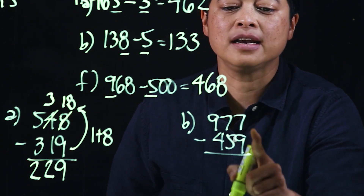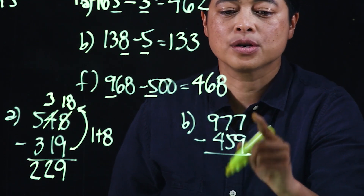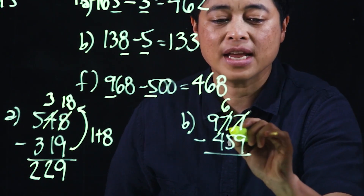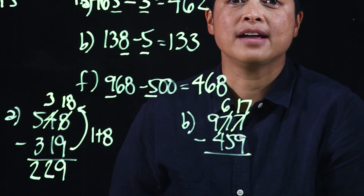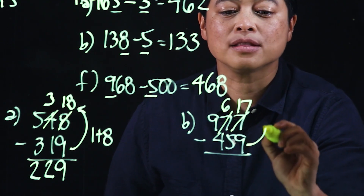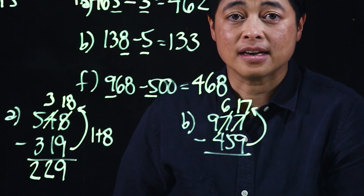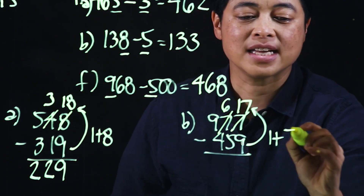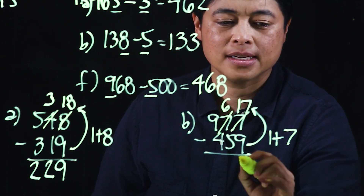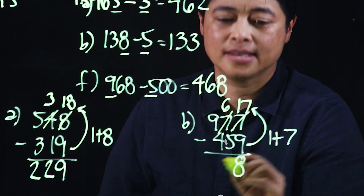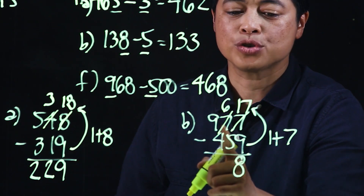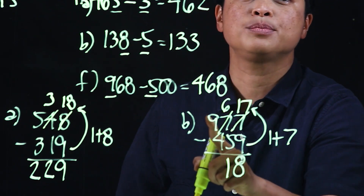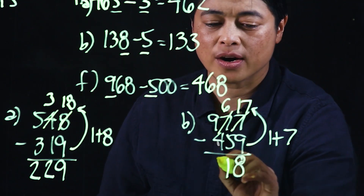Similarly, looking at this next example, we cannot subtract 9 from 7, so we will borrow from 7, making it 6. We regroup, making the ones 17. We need to get to 17, so 9 needs 1 and an extra 7, which means this will be 8.